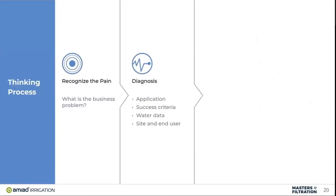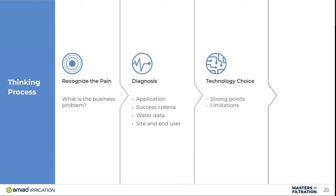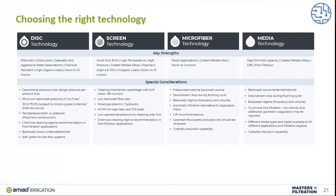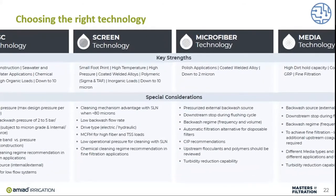Now we've gone through diagnosing the problem. We start talking about our technology choice — what we want to use and how we want to use it. We need to look at the strong points and limitations in filtration, because all filtration has both. This is where we start talking about our different types of technologies: disk technology, screen technology, microfiber, and media — that's what we're going to see more in our realm.